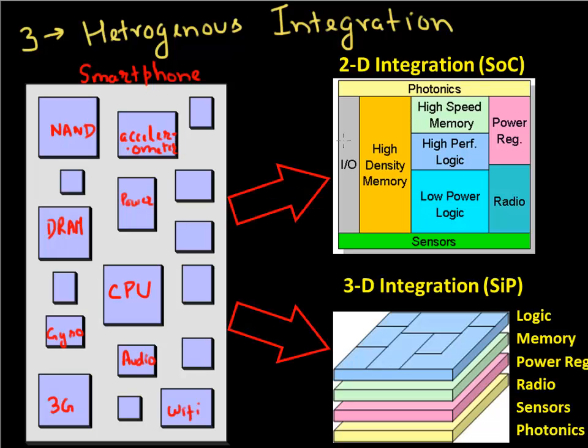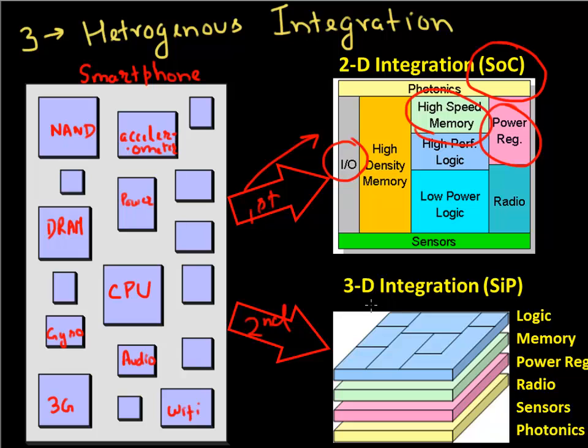There can be only two ways you can enable heterogeneous integration. One of them is essentially moving more and more of these functionality into one single chip. That is moving to a system on chip where you have all these functionality—wireless, power regulation, memory—into one single chip. Or the other way is to have these individual chips which are optimized for each functionality, and then you stack them on top of each other using 3D integration.